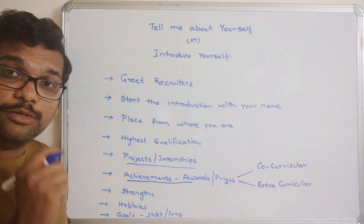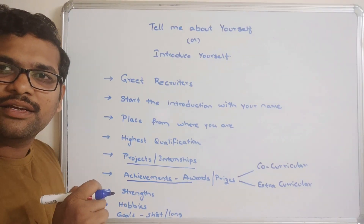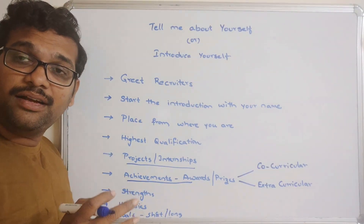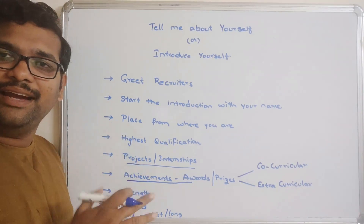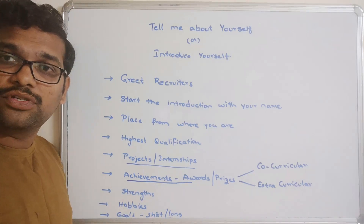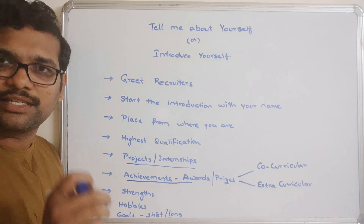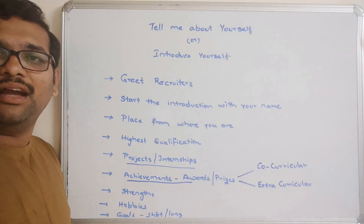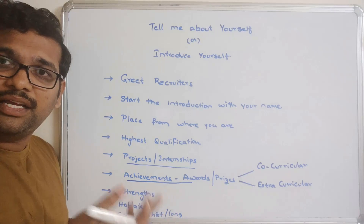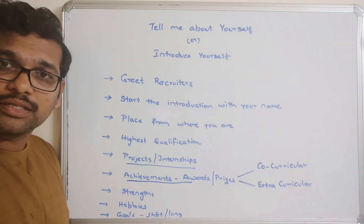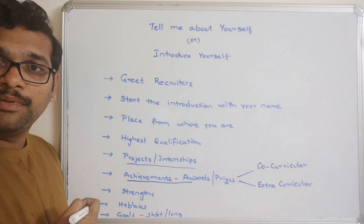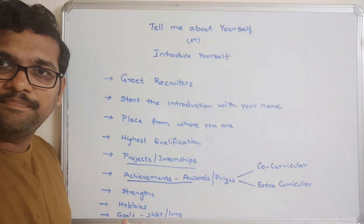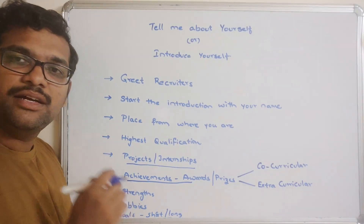Hobbies are very important — be honest and precise while stating your hobbies. Don't say reading books if that isn't really your hobby. Be honest because you may get follow-up questions related to your hobbies. If you say your hobby is reading books, the next question may be about book titles and authors. If you say listening to music, questions may follow about music. So while saying hobbies, just be honest.